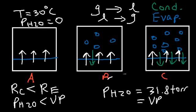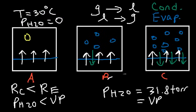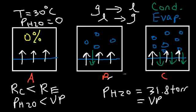Now let's talk about relative humidity for each beaker. At beaker A, the partial pressure of water is zero, so the relative humidity is 0%. For beaker B, the partial pressure was 10 torr and the vapor pressure is 31.8 torr, so 10 divided by 31.8 times 100% gives a relative humidity of 31%. For beaker C, the partial pressure equals the vapor pressure, so the relative humidity is 100% — whenever the rate of evaporation equals the rate of condensation, the relative humidity is 100%.